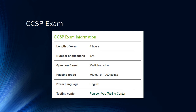The exam duration is four hours and the number of questions is 125. You need to get more than 70% to clear the exam. All questions are multiple choice — you will not face any drag-and-drop questions. Right now the exam is only available in English and you can take it at any in-person testing center. The CCSP is a very valuable certificate and it's not hard to get, so if you plan to get into cloud security, this is the right certificate.